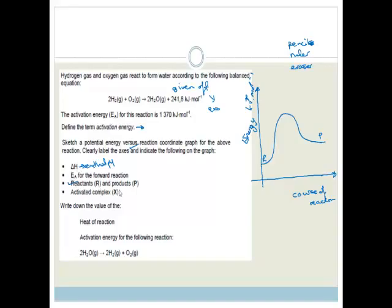Now they want the activated complex. That's easy, that's X. They want the enthalpy, which is the heat of reaction, the amount of energy given off. It's also the difference between the energy that it started with and the energy it ended with. So that there is delta H. And then the activation energy for the forward reaction is the energy required to get this reaction going. So that is your activation energy or your EA.